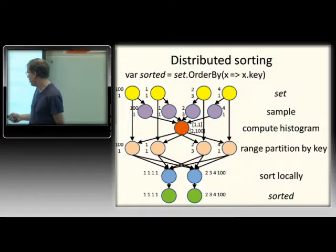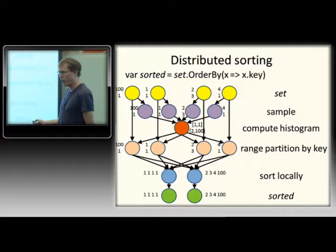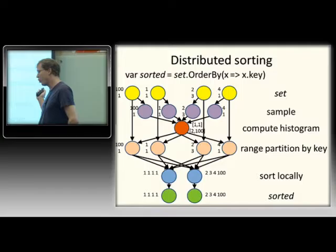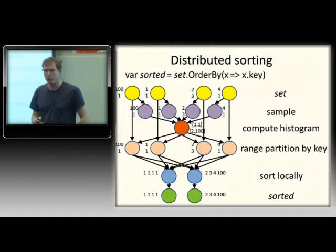Question: if the downstream sort nodes are not available when the upstream range partitioner tries to write, what happens? The answer is they write to a file. That is in fact true for all edges — I'll talk about that later.